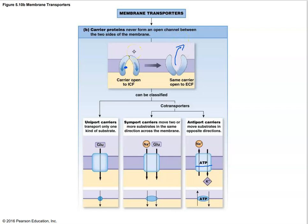Here are some examples. We have a glucose transporter — a uniport — transporting glucose across a biological membrane. Here's another example: a symport, where sodium and glucose go in the same direction. That would be a co-transporter, or a symport.